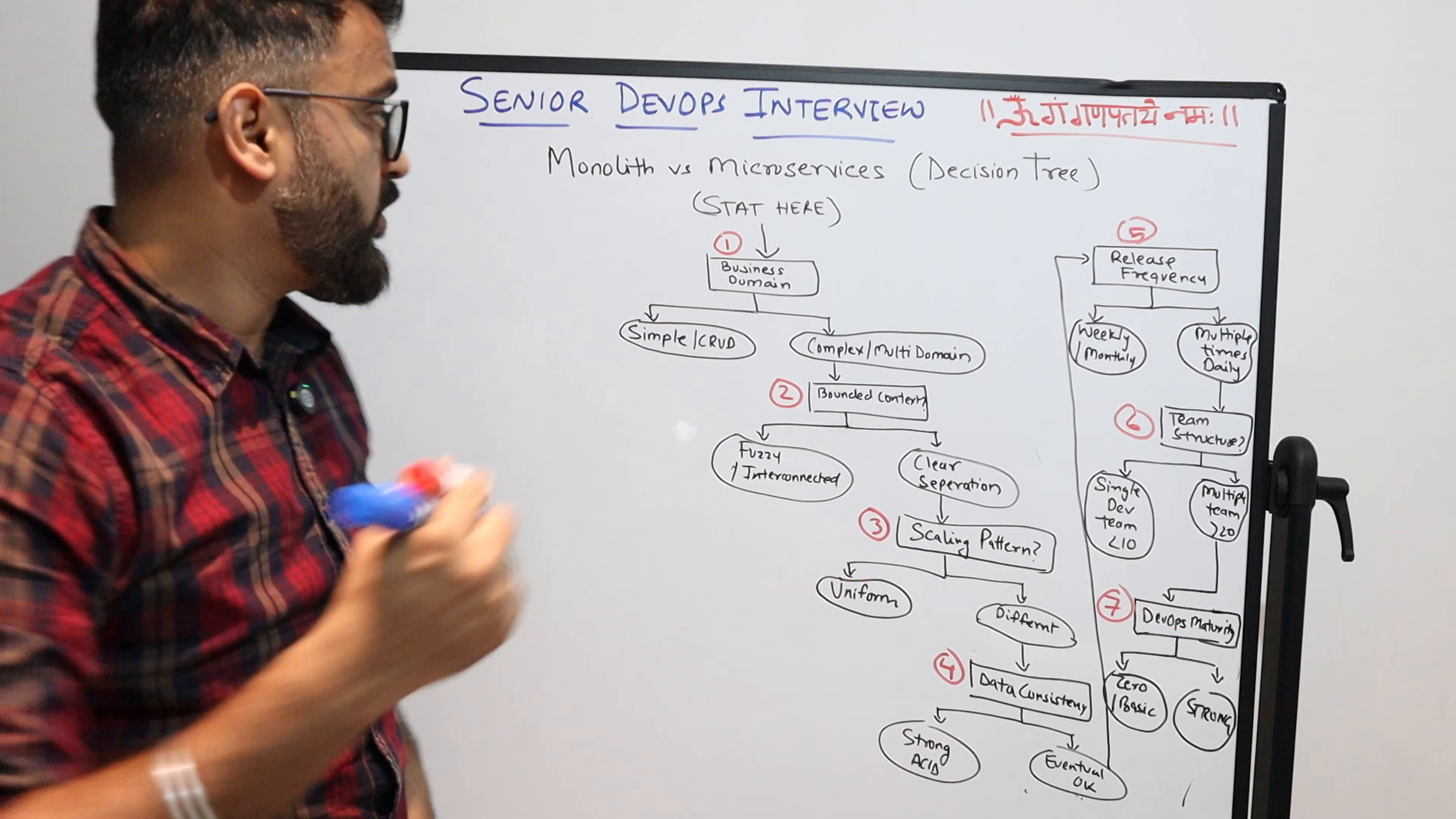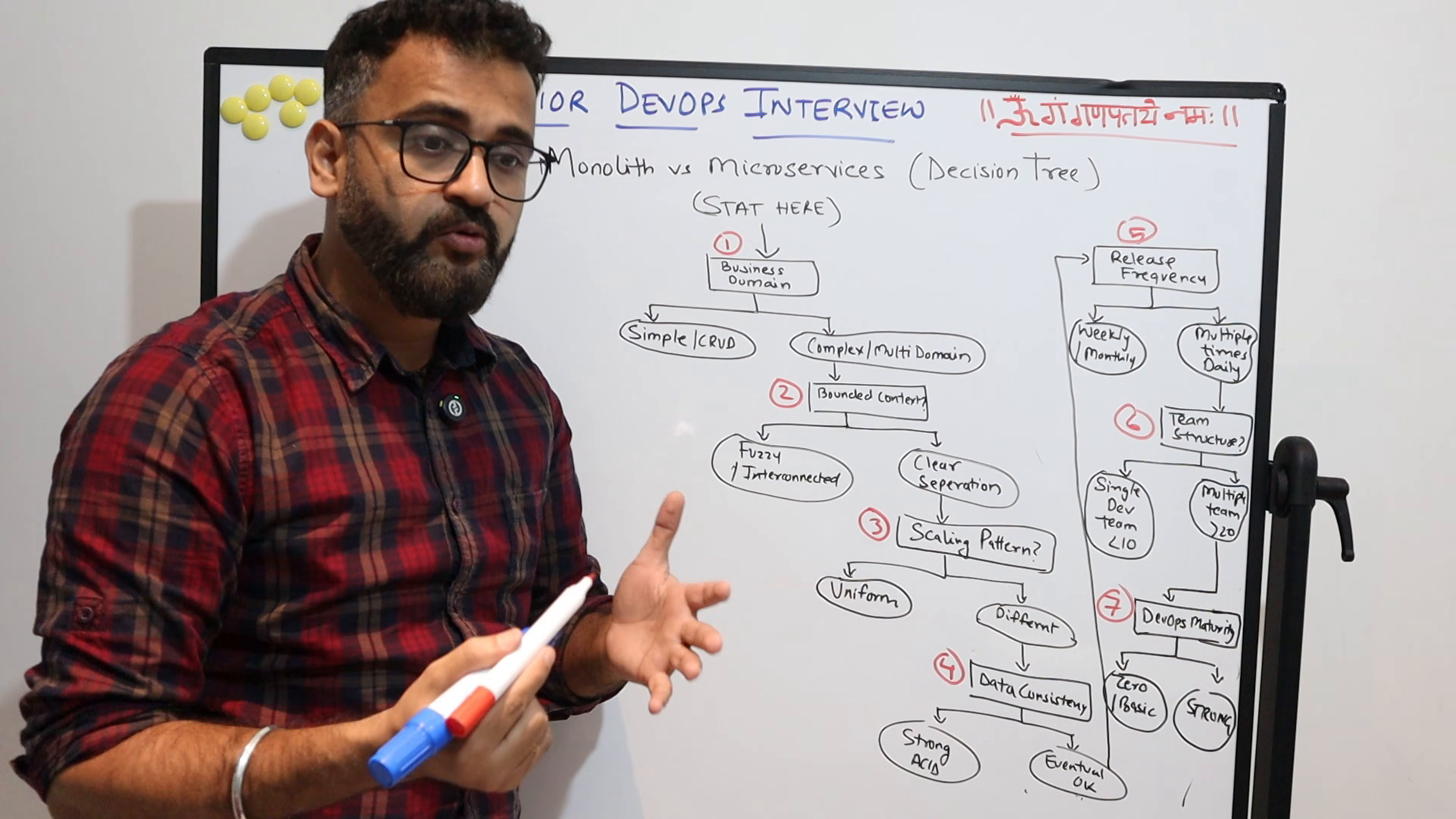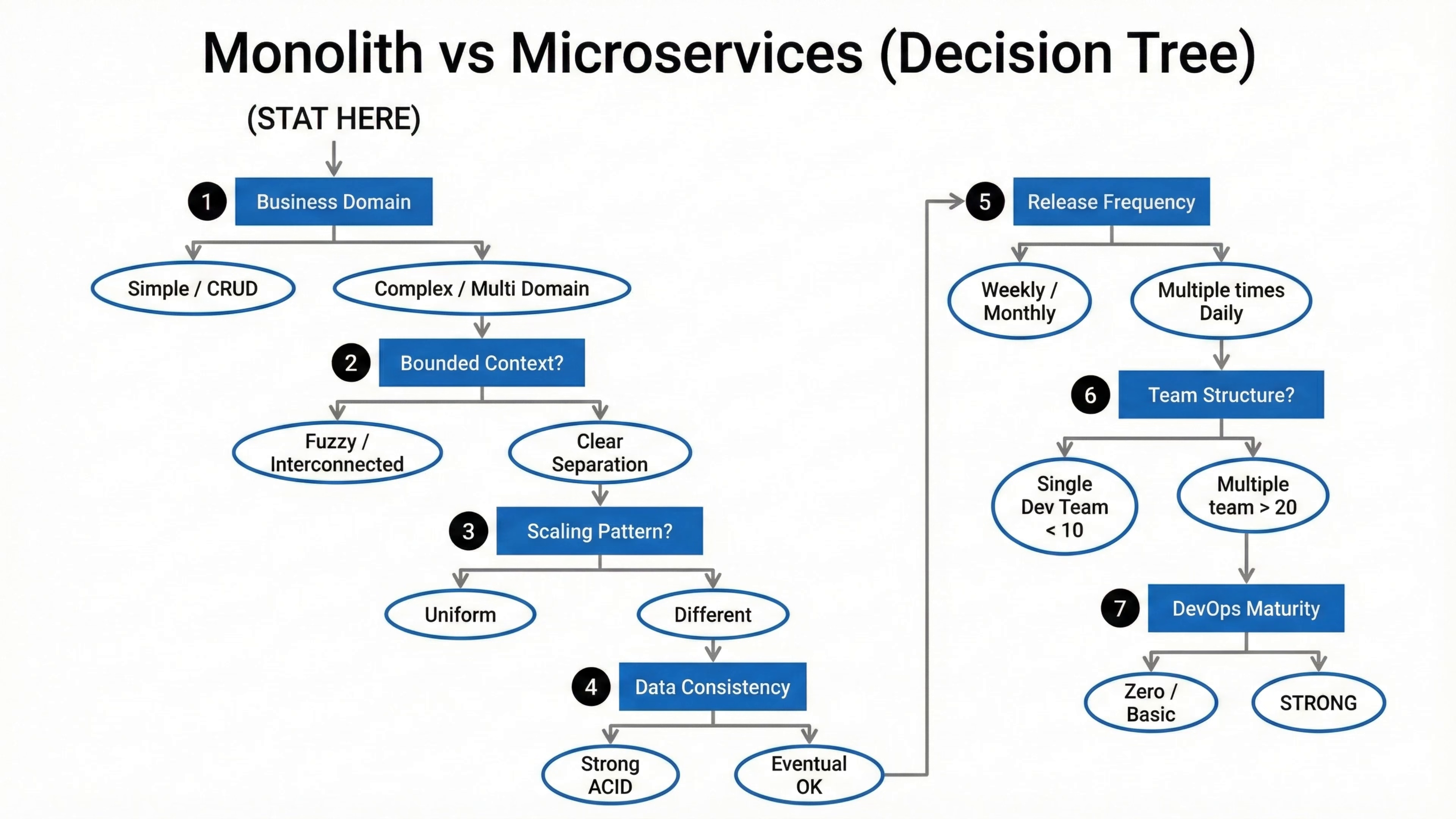So friends, I have now come up with a decision tree matrix which you can use during your interview for asking the right questions in order to come to a point where you can decide whether this use case is better fit for monolith versus a microservices architecture.